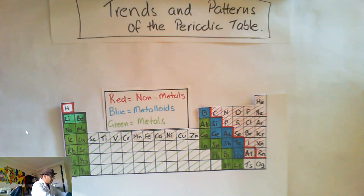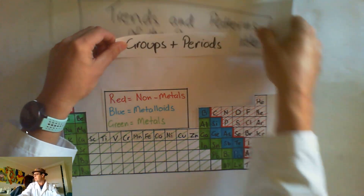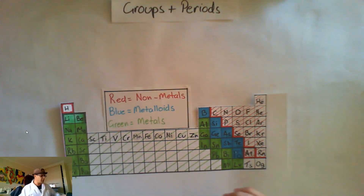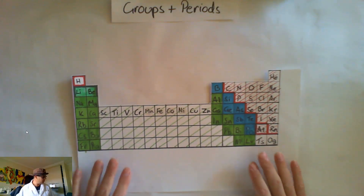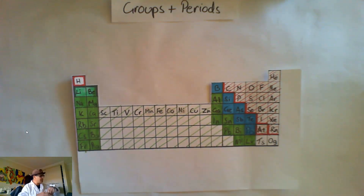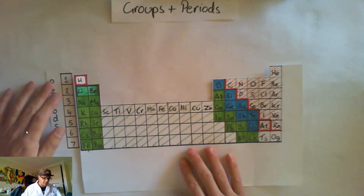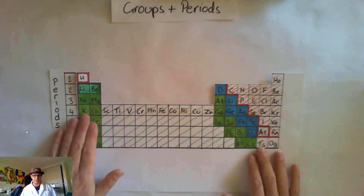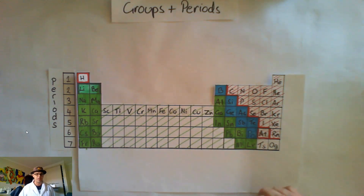Let's talk about groups and periods. You would have done a little bit about groups and periods already, especially when you've done your Bohr models. Let's look at groups and periods in a little bit more detail. I'm going to start with periods first. I've got my periods down the side here — period one, period two, three, four, all the way through to seven.